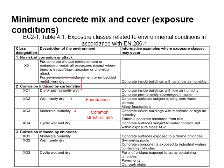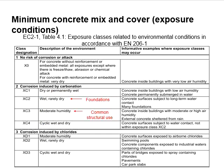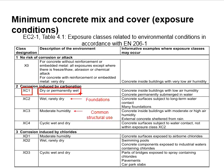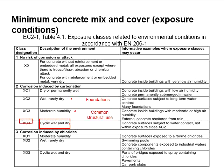Within each type of exposure, there are different degrees of severeness in terms of exposure, normally defined by regularity and rated according to numbers. For example, XC1 is meant for dry and permanently wet conditions. XC2 is wet and rarely dry. XC3 is moderate humidity. XC4 is cyclic wet and dry.